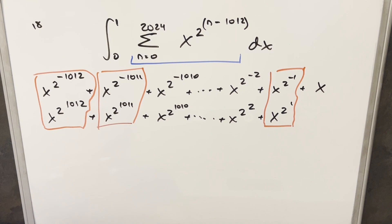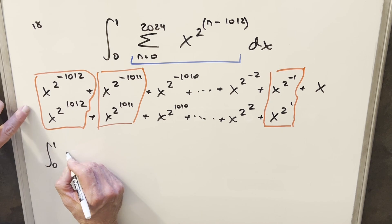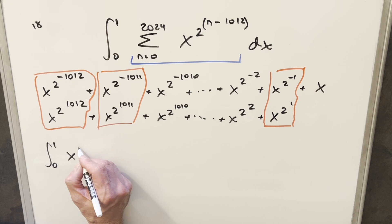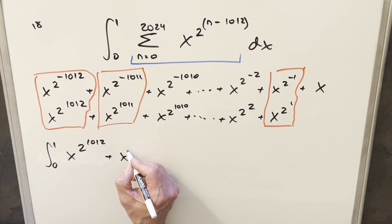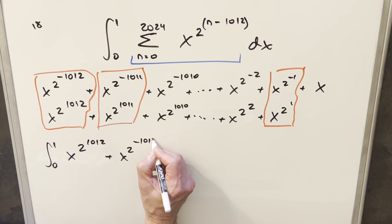So now what I'm going to do here to try to get some simplifications, I'm just going to look at one of these pairs and put it back into the integral. Let's just take this first one, and we're integrating from zero to one. And so just these two, this is going to be x to the 2 to the 1012 plus x to the 2 to the minus 1012.